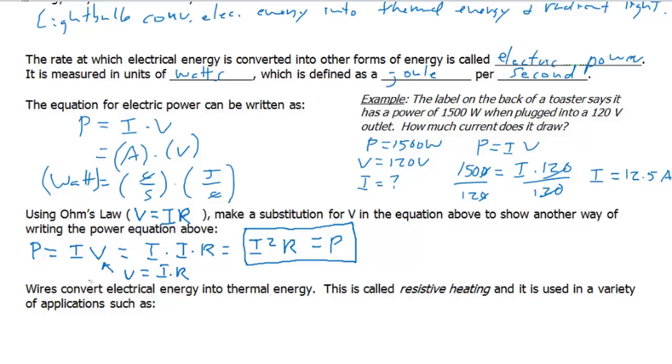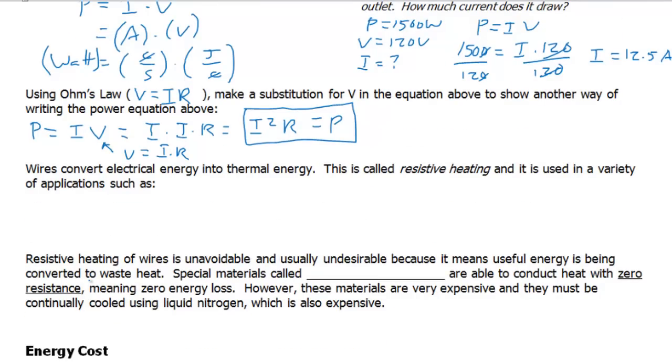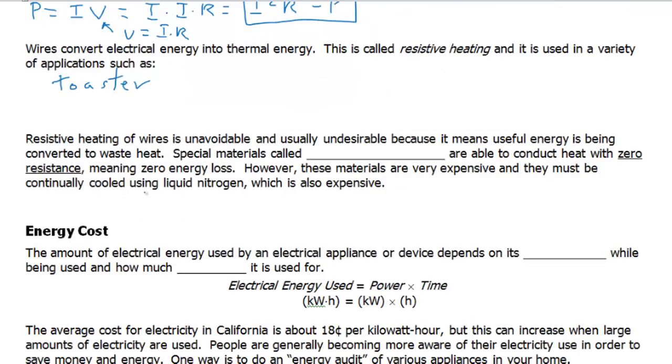Wires convert electric energy into thermal energy, as we saw vividly with our demonstration with the car battery. This is called resistive heating, and it is used in a variety of applications. I would like you to write down a few applications that you know of where we use electric energy flowing through wires to create heat or thermal energy. So go ahead and pause the video, write down some examples. Okay, maybe you came up with a toaster as an example. And tomorrow in class, I'll have you share some more of your examples. Try to have at least three written down.